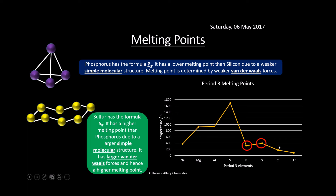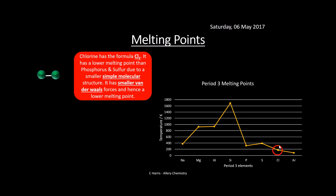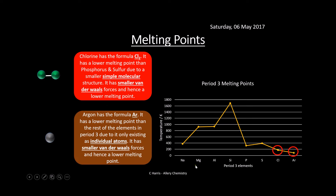Chlorine dips a bit — it's only Cl2, not as big as S8, so it has a much lower melting point. Simple molecular again — smaller van der Waals forces, much lower melting point. And it drops again for argon. Argon is literally just on its own, it doesn't bond with anything — it only exists as individual atoms, so we call it monoatomic. Much smaller van der Waals, lower melting point.